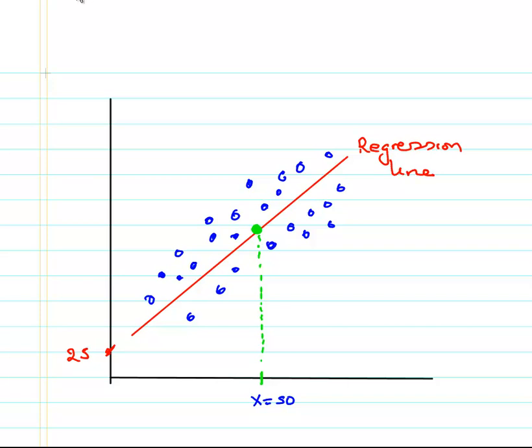This green dot here, that is our predicted value for y, y hat, when x is equal to 50.